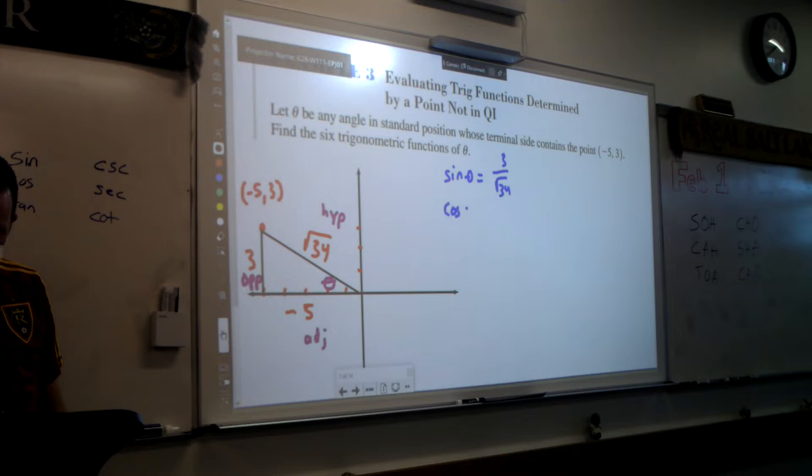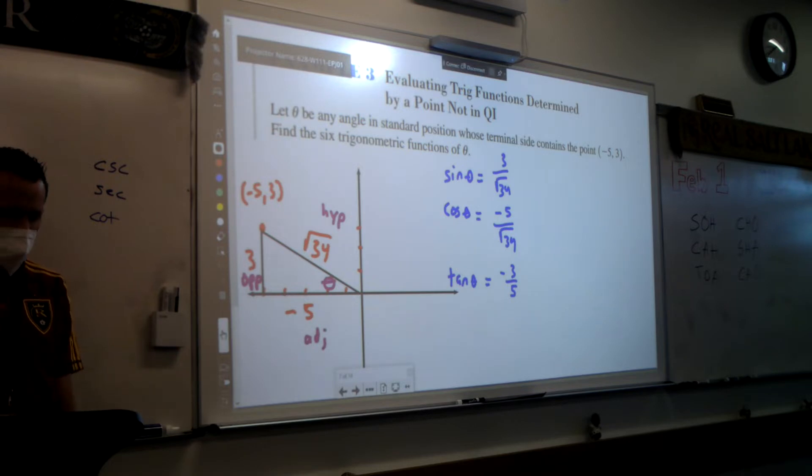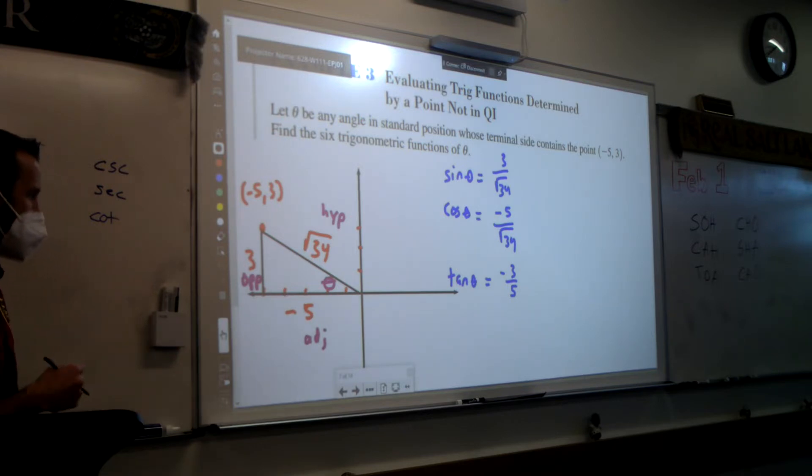So then when I go to cosine, adjacent over hypotenuse, that's going to be a negative 5 over the square root of 34. The only difference between last time is there's negative. And then when I do tangent, that's opposite over adjacent, so that's going to be negative 3 over 5. So the ones that involve the adjacent now have a negative with them.